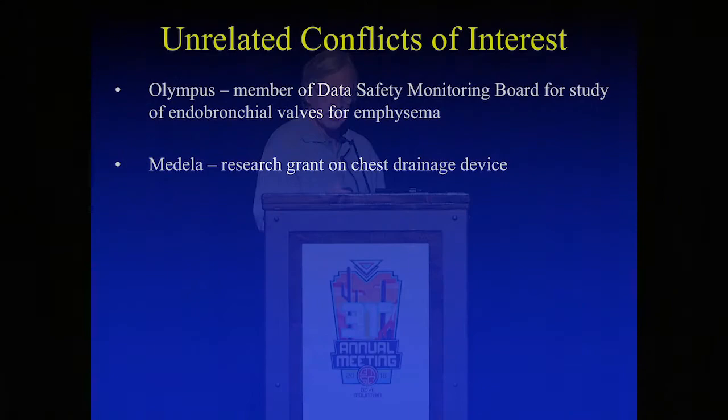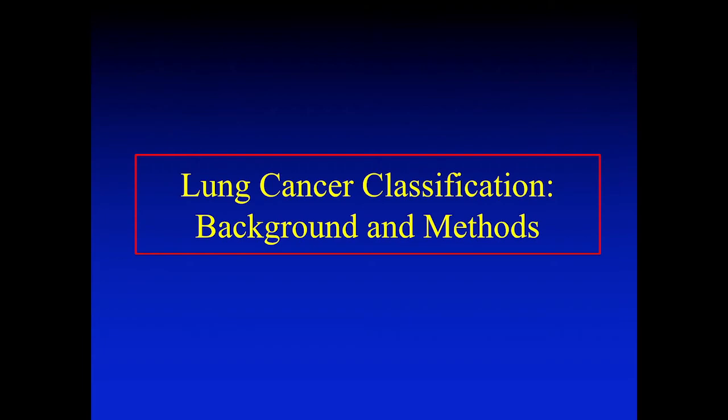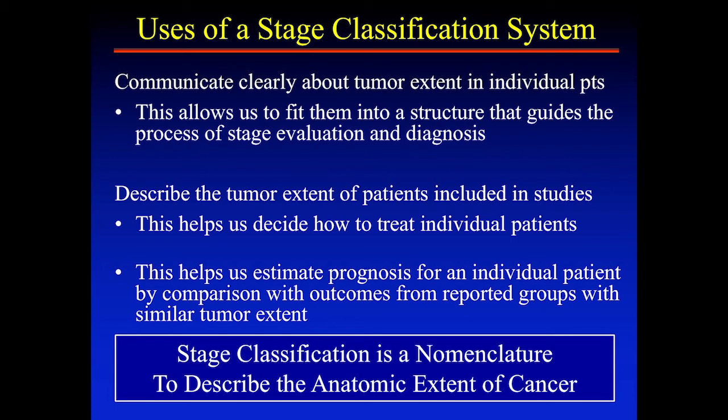Thank you for the invitation to be here. I wanted to give a little background because I never really gave much thought to it — every once in a while a new staging system comes out and you adopt it, without thinking about how it happens, who makes the decisions. So it's useful to think about what we want out of a stage classification system. Mainly it allows us to communicate about the anatomic extent of disease, apply data from papers, and run studies.